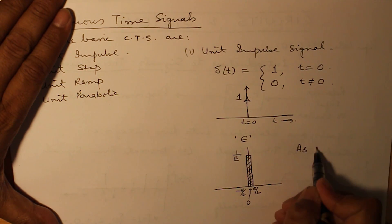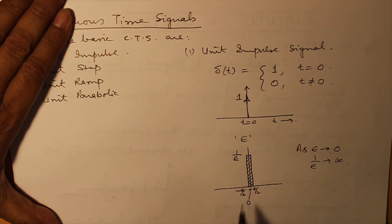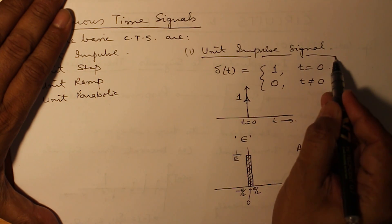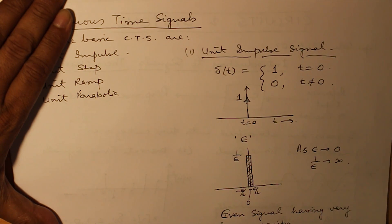As epsilon tends to 0, 1 over epsilon tends to infinity. So, basically, a unit impulse signal is an even signal having very large magnitude at infinitesimally small interval of time.